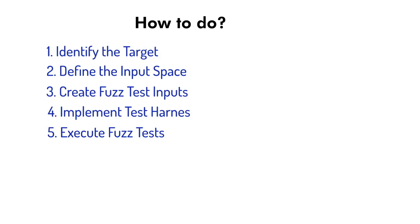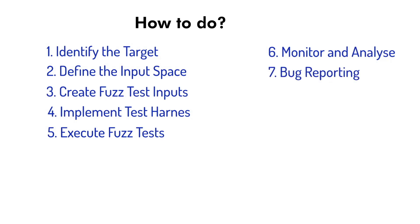Execute the fuzz test — run the fuzzing process with the test harness and the generated inputs. The testing tools will automatically execute the application with different inputs repeatedly. Monitor the application's behavior during fuzz testing; if the application crashes, hangs, throws an exception, or exhibits unexpected behavior, the fuzzer will record the input that caused the issues.